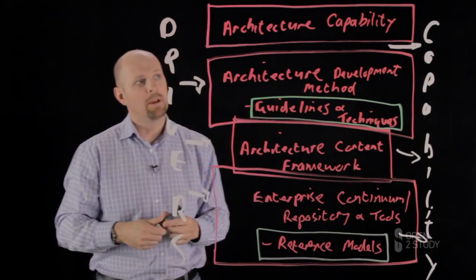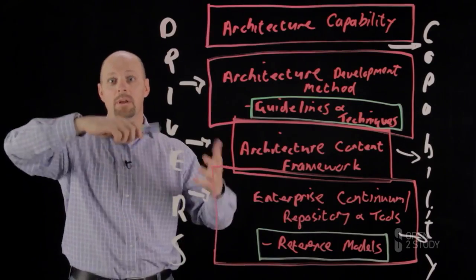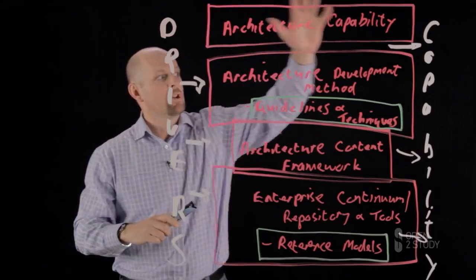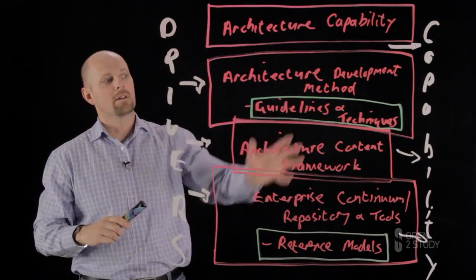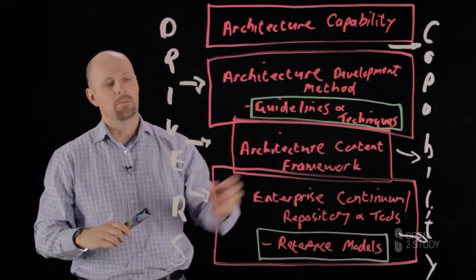Now you'll notice from this that there's actually a piece missing. If you remember our three pieces—we had the bucket, the method, and at the top we had the outputs, the views. TOGAF doesn't actually deal with that here. It's dealt with specifically within the continuum repository and tools and some of the content framework.